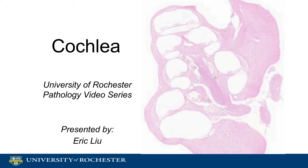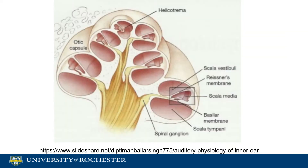This is a video on the normal histology of the cochlea, which is part of the auditory system. This is the cochlea. Its function in the auditory system is to sense sound vibrations and translate them to nerve impulses.